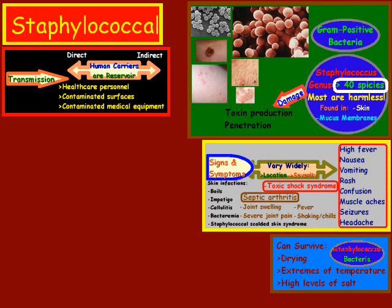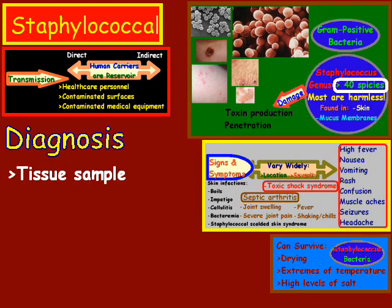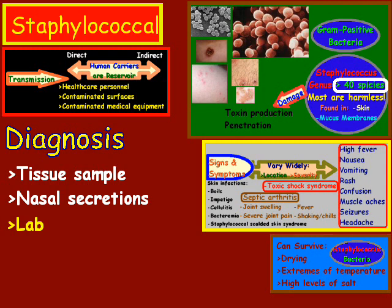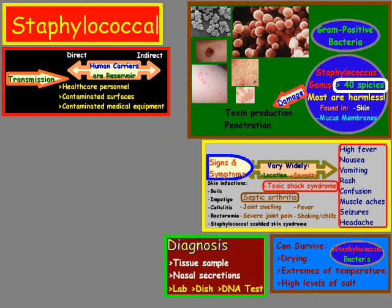When we look at the diagnosis, it typically consists of a tissue sample or nasal secretions collected by a doctor, sent to a lab, and placed in a Petri dish where it is cultured. Usually within up to 48 hours they can determine if it is staph or not. More recently, DNA tests can provide a quicker turnaround time than the typical lab culture.